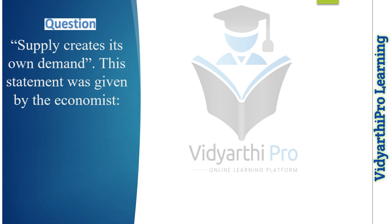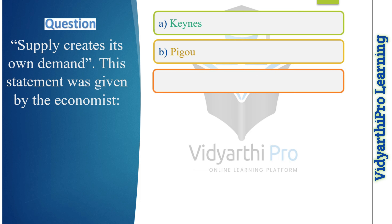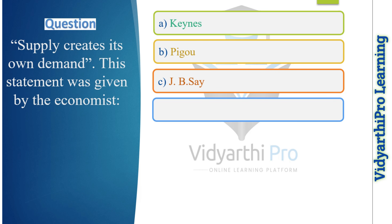Our first question is: 'Supply creates its own demand' — this statement was given by which economist? Option one: Keynes. Option two: Pigou. Option three: JB Say. Option four: Adam Smith. In Hindi: 'Aapurti apni maang paida karti hai' — yah bayaan kin artha shastri dwara diya gaya tha? The correct answer is option C, JB Say.